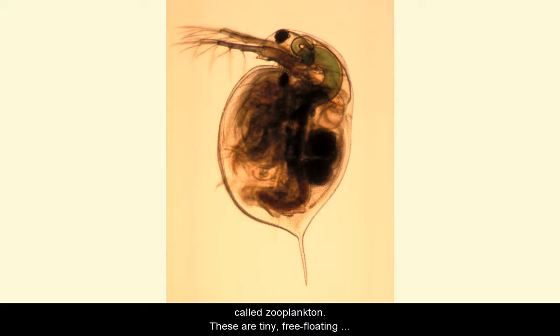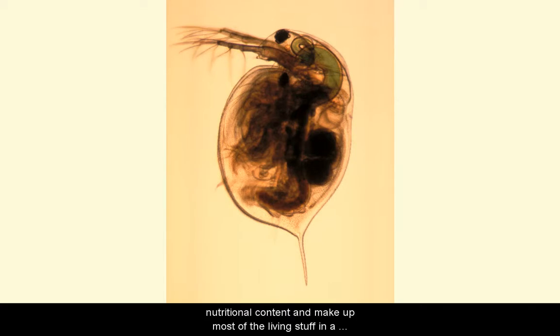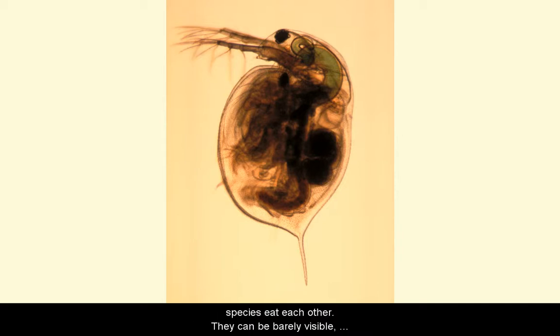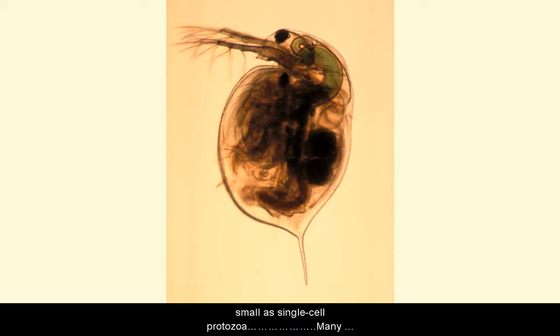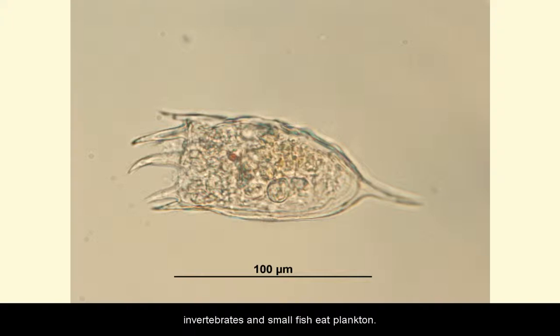The second type is called zooplankton. These are tiny, free-floating animals. Plankton have a high nutritional content and make up most of the living matter in a pond. Zooplankton eat phytoplankton, and many species eat each other. They can be barely visible, complex organisms such as water fleas, or they can be small, such as single-celled protozoa.